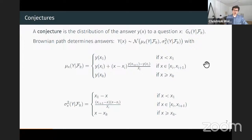For the variance: to the left of the leftmost known point, the variance is the distance of question X to that leftmost point. Similarly for the right. In between, the variance is a concave function. The further you are from existing knowledge, the more imprecise the conjecture.